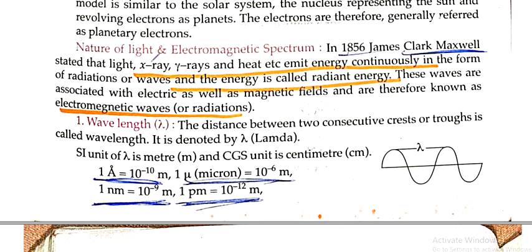X-ray, gamma ray and heat emit energy continuously in the form of radiation or wave and the energy is called the radiant energy.